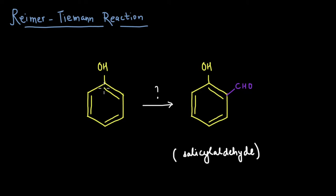Let's look at the Reimer-Tiemann reaction in which we start with a phenol and our end product is this phenol with a CHO added here, which is called salicylaldehyde. So let's see what the reagents are and how this reaction takes place.